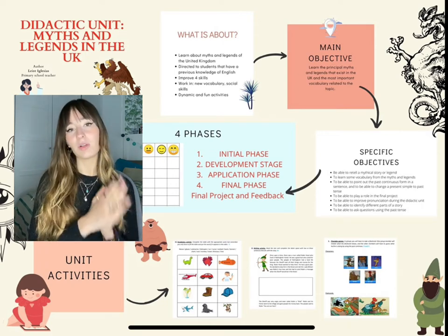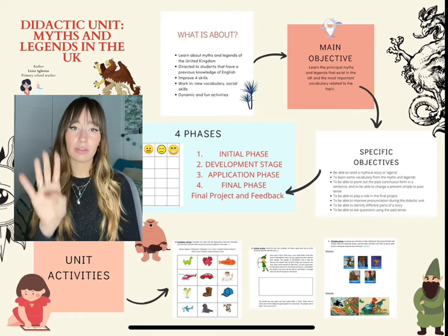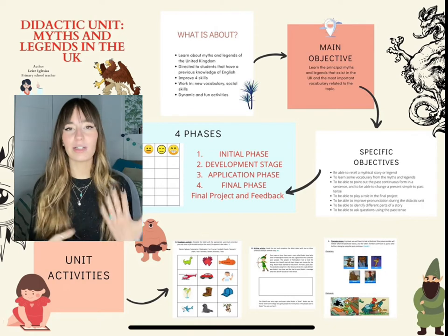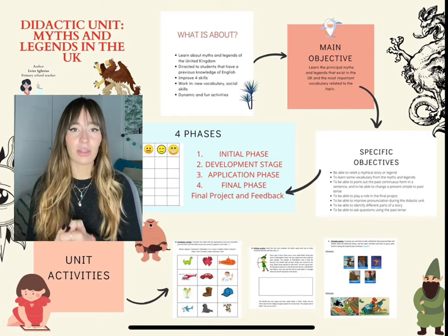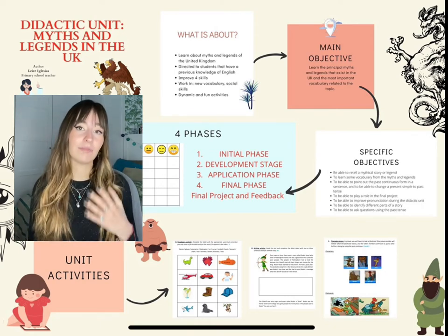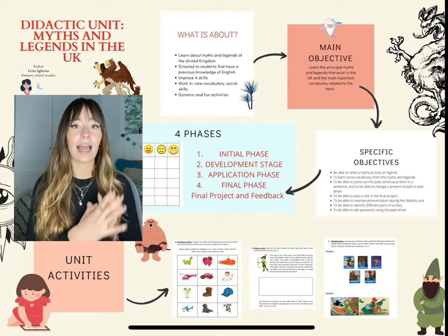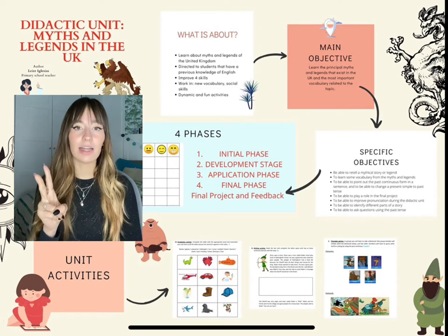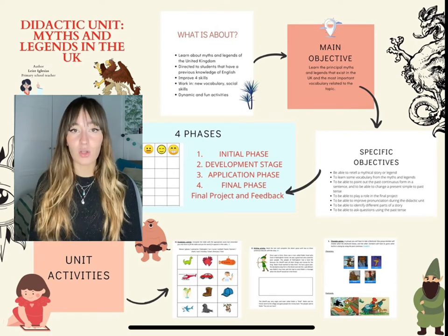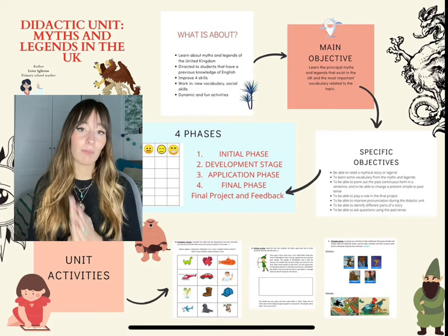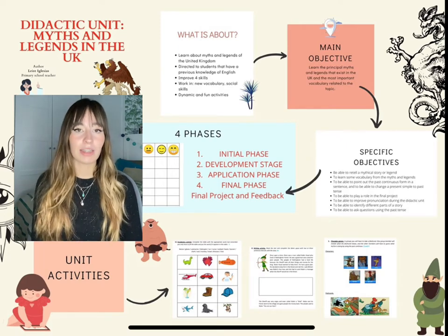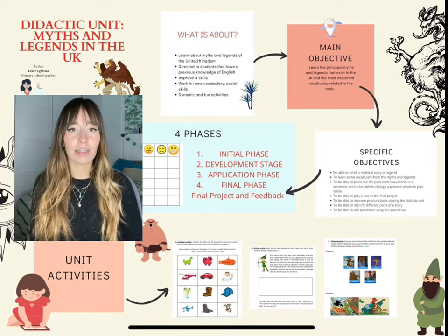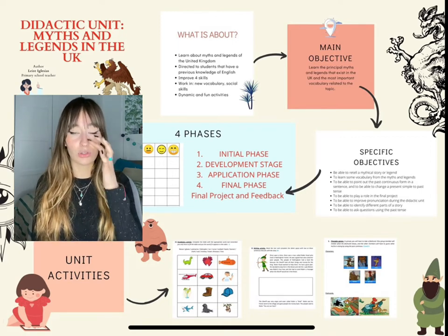The unit will be divided into four different phases. The first one is the initial phase, where they will start getting in touch with the new topic and will do some readings regarding the myths and legends they will be working on. The second one is the development stage, where the grammar point will be introduced — in this case, the past continuous — and they will work on activities to learn how to use this grammar point.